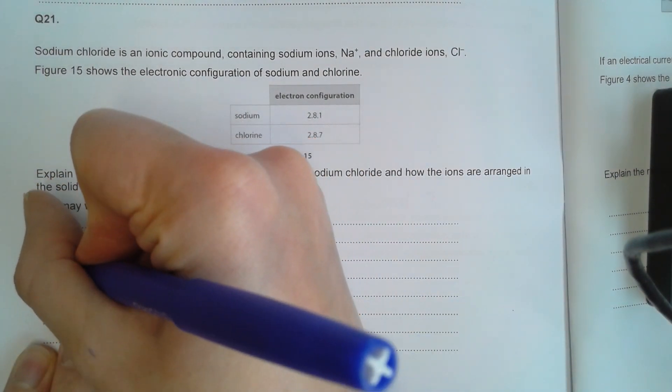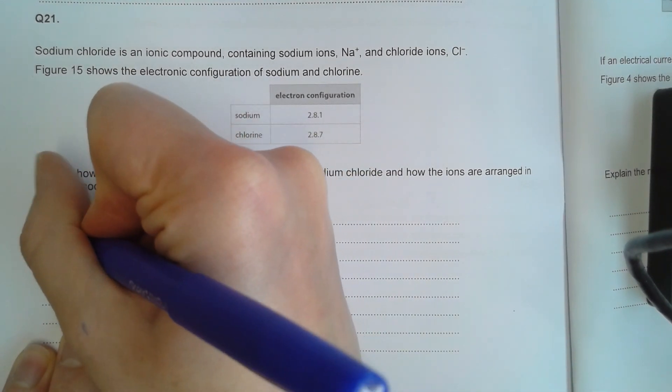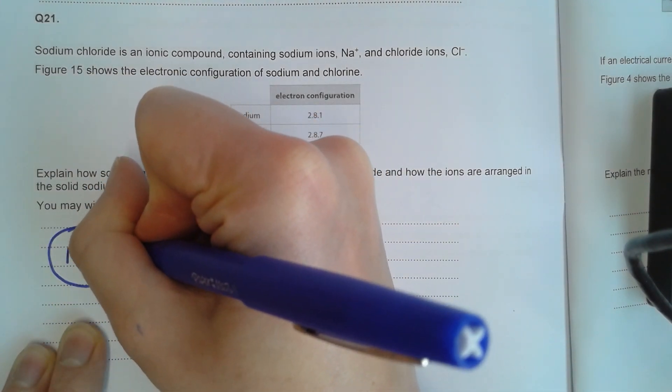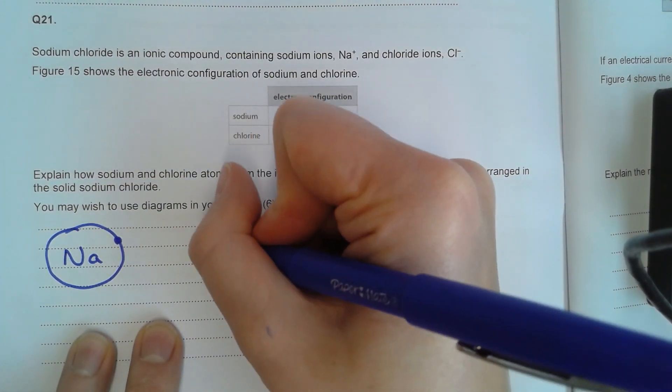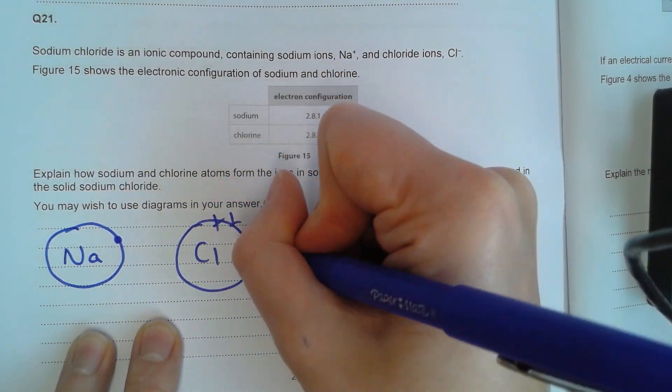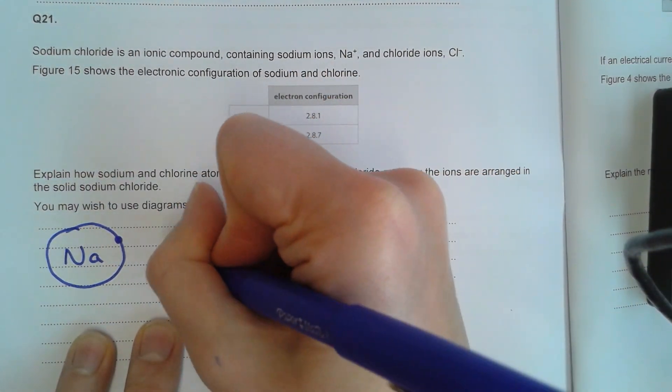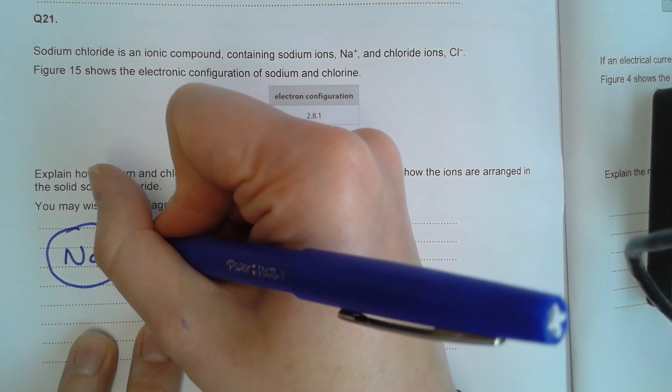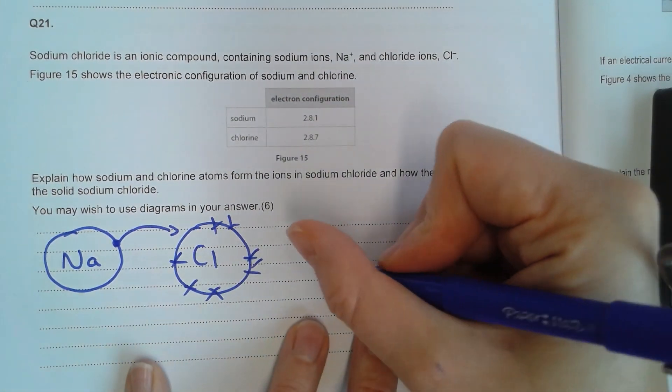So if I look at sodium, all I need to do is sodium is in group one. So I draw sodium with one electron in the outer shell. Chlorine's in group seven. I draw it with seven. So I'm using dots and crosses. It doesn't matter which way around.